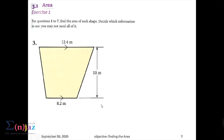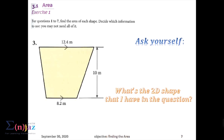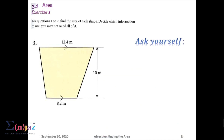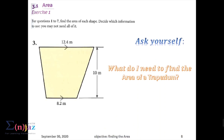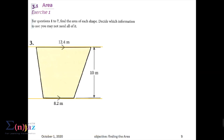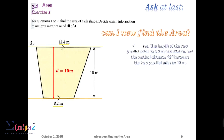So we know that this is a trapezium — two parallel sides — and the vertical distance between the two parallel sides is known, and all dimensions are in meters. The steps you should go through: what is the two-dimensional shape we have? It is a trapezium. How do we know it's a trapezium? What do I need to find the area of a trapezium?